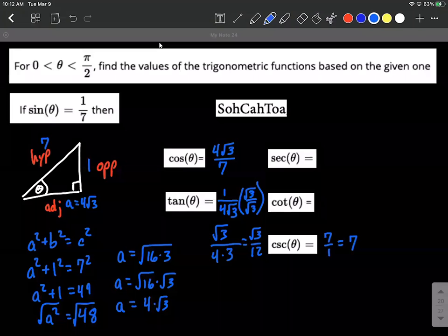Next up we have the secant. Well for these other ones these are the reciprocal identities. We can say that secant is the reciprocal of cosine. So we can say 7 over 4 square root of 3. Again, maybe we rationalize this by multiplying numerator and denominator both by square root of 3. This will give us 7 square root of 3 over 4 times 3 or 7 square root of 3 over 12.